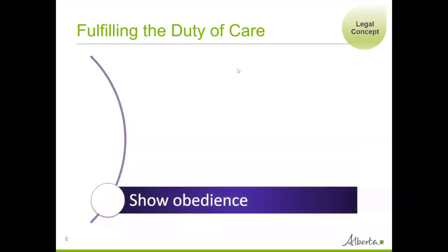The last one we cover is to show obedience. Board members must comply with all applicable laws in the external and internal rules of the organization. The most important rules to follow include legislation, regulation, objects, bylaws, policies, board motions, and procedures. One example of showing obedience is filing an annual tax return. You may say that nonprofits don't have to pay taxes, and that's correct, but they still must file an annual return — so that's one example of showing obedience.